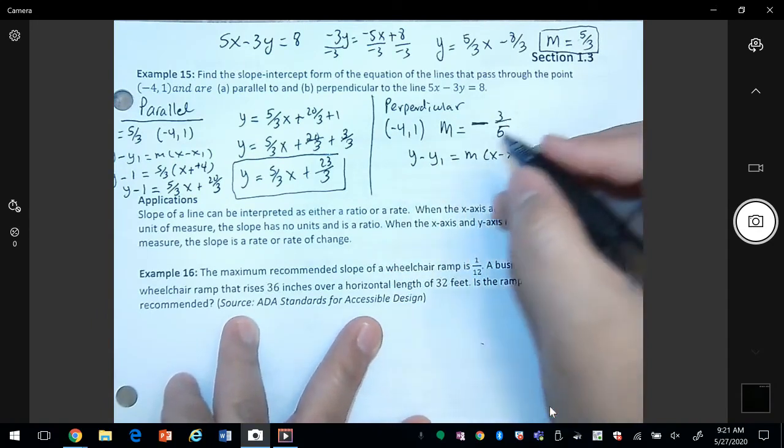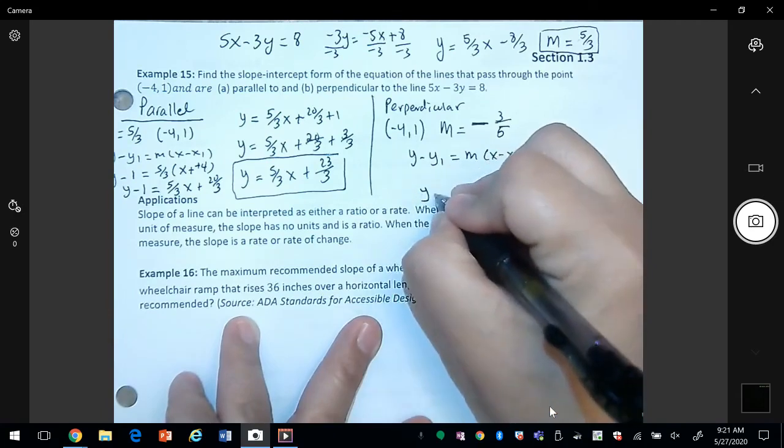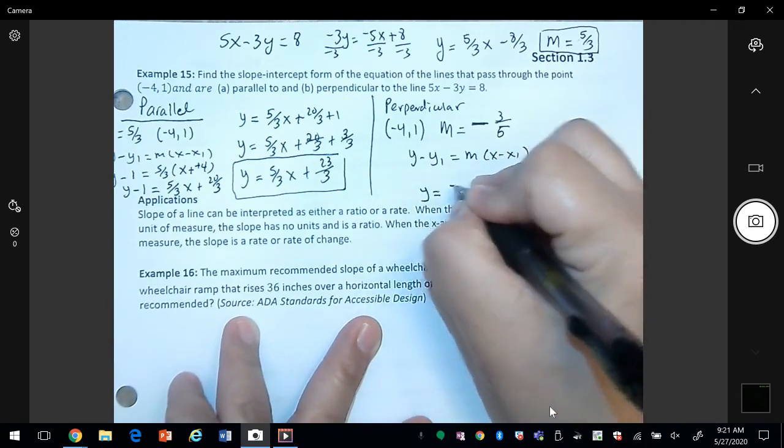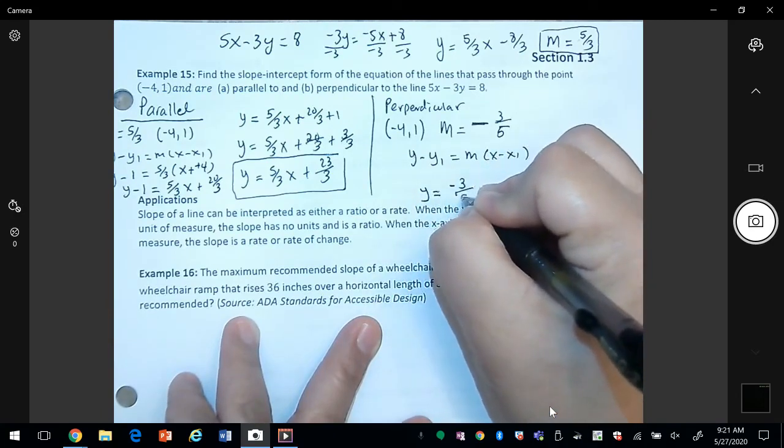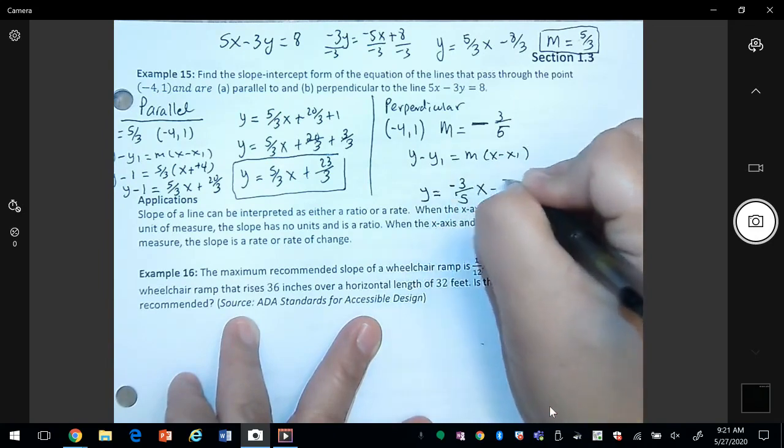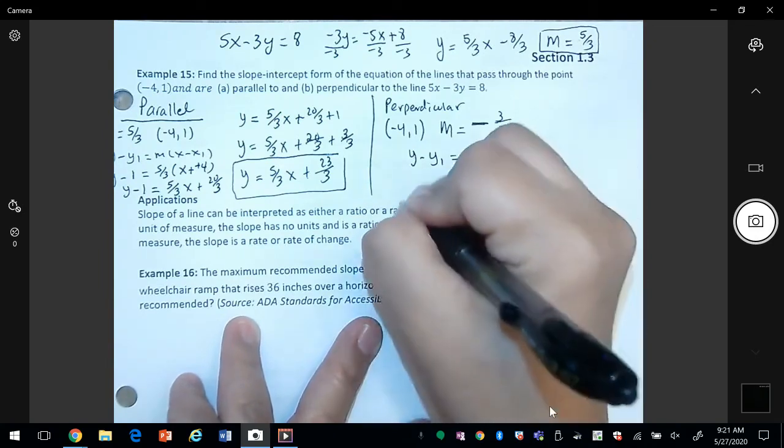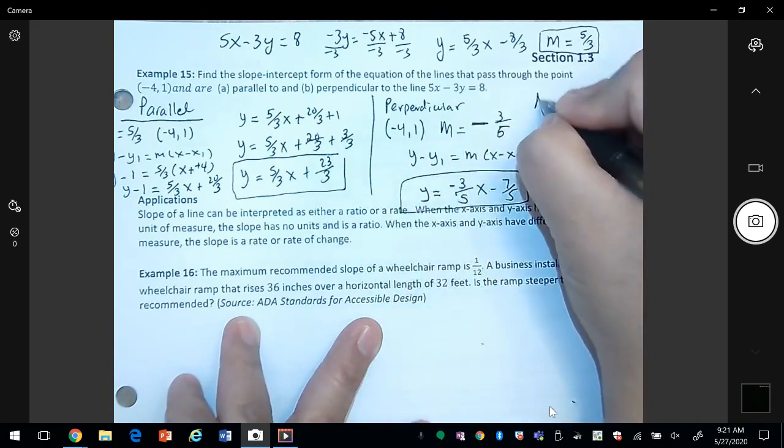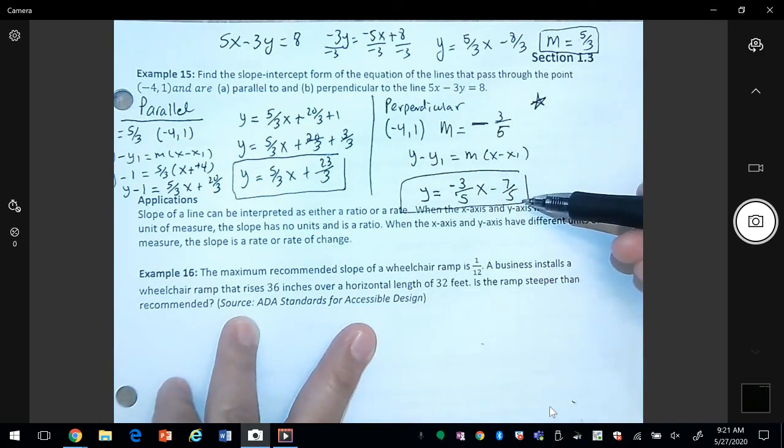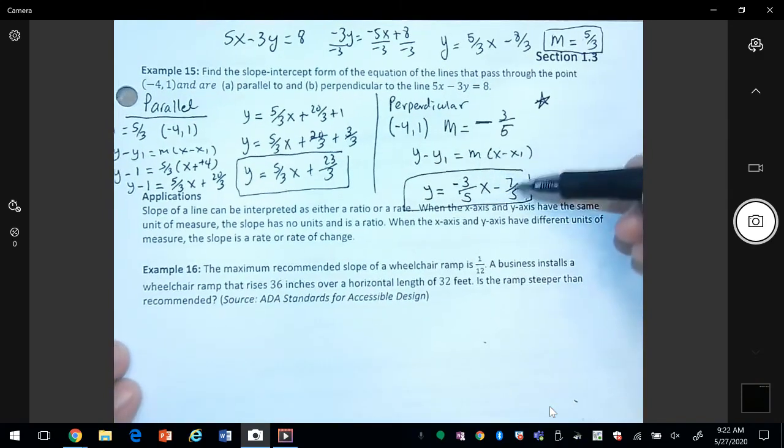So if you do this correctly, then your answer will be y equals negative three fifths x minus seven fifths. So I'm going to put a star here, and that means try it on your own and see if you get this answer. If you don't, please reach out to me and I'll help you find your mistake.